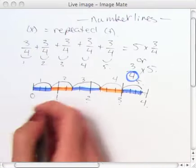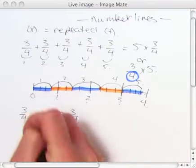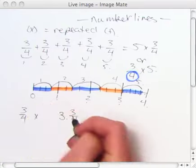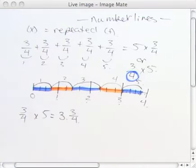So now I know that 3/4 multiplied by 5 is equivalent to 3 and 3/4. Hope you enjoyed. We're going to look at the area model next.